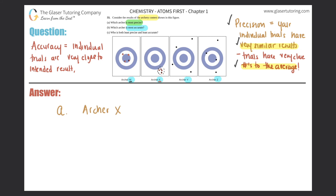In experimental data, accuracy means being close to theoretical numbers — numbers that actually exist and are true. For an archery contest, to be accurate you would want to hit the bullseye. The more times you hit the bullseye, the more accurate you are. So for part B, which archer is most accurate? It's going to be the one closest to the intended result — hitting the bullseye.